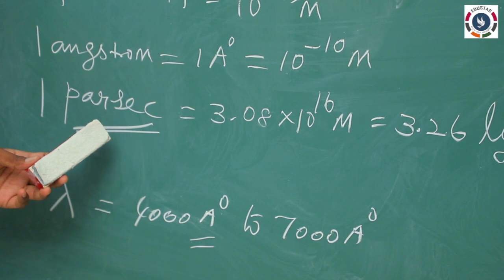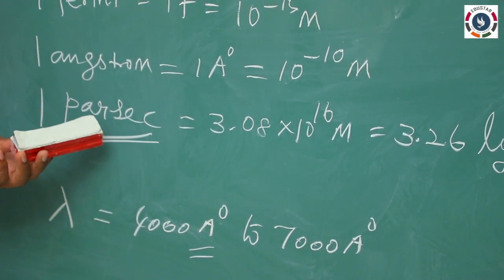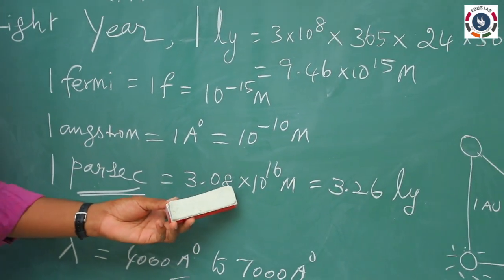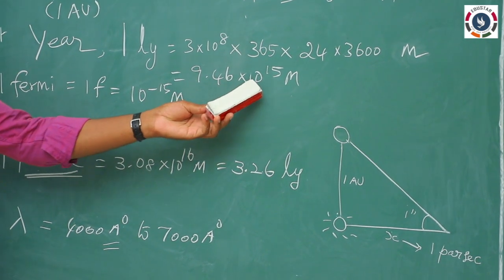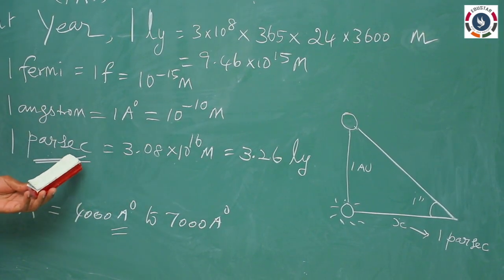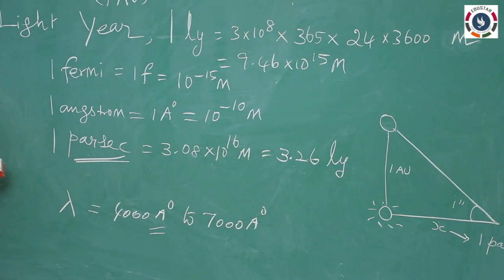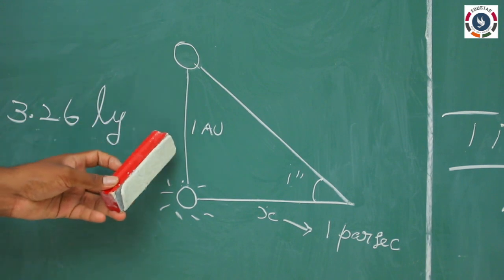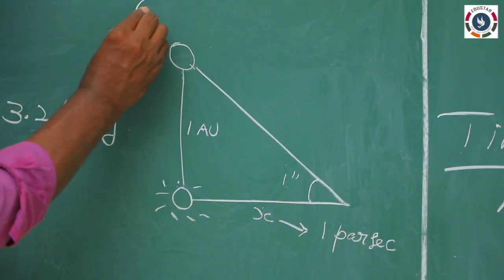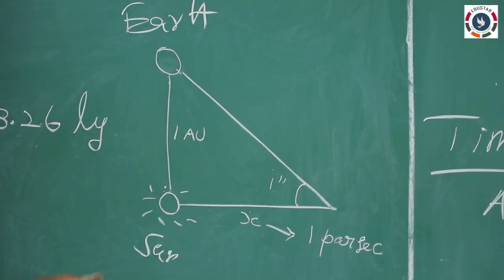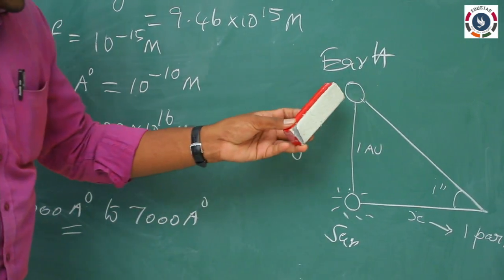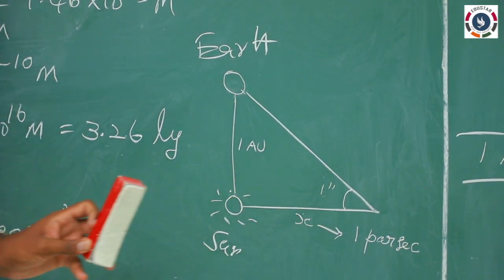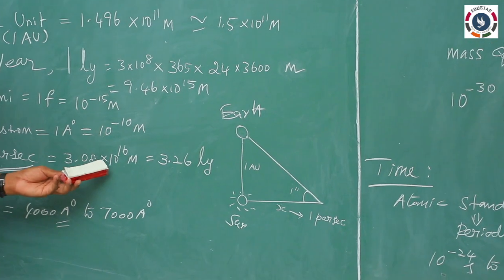The last one is the parsec, also known as parallactic second. It is also a distance, greater than the light year, whose value is 3.08×10¹⁶ meter. We can also represent it in light years. 1 parsec is the distance at which 1 astronomical unit subtends an angle of 1 second. That distance is called parsec, and we write it as 3.08×10¹⁶ meter.